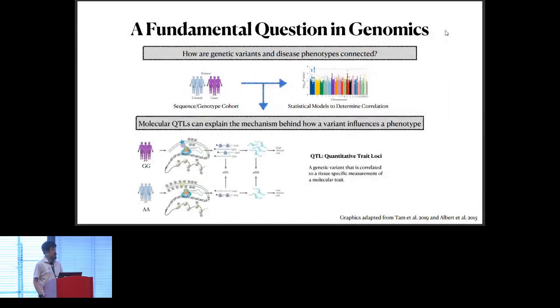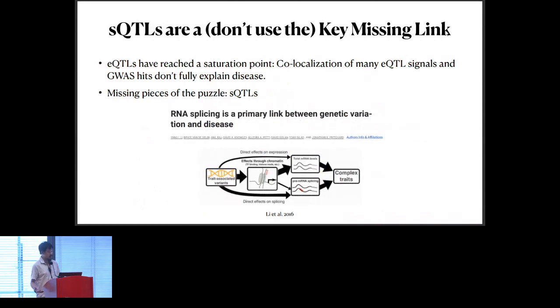While statistical associations are nice, they don't necessarily tell us how a variant actually acts on a phenotype. The field has turned to molecular QTLs, which are quantitative trait loci where a genetic variant is correlated with some molecular measurement of interest, such as gene expression or alternative splicing. If a genetic EQTL co-localizes with a GWAS signal, this tends to only explain a small fraction of GWAS signals. What was observed in the seminal paper late 2016 was that many GWAS signals actually co-localize with SQTLs, or genetic variants that are associated with splicing. SQTLs can be seen as the missing piece of the puzzle or one of the main links between genetic variants.